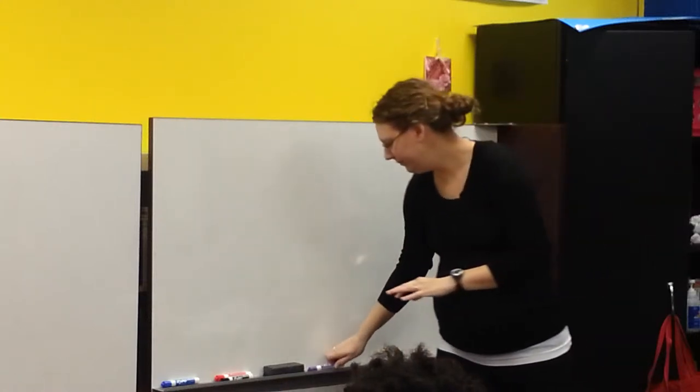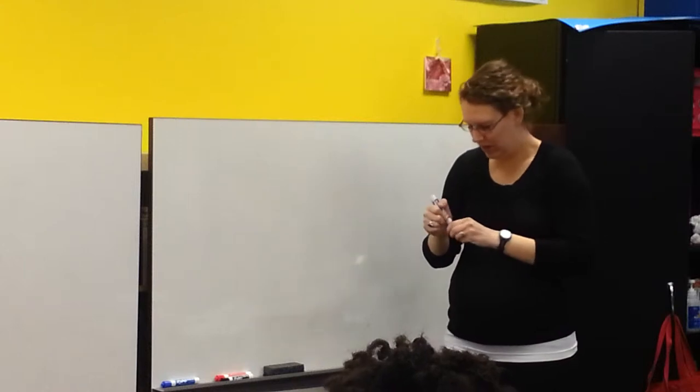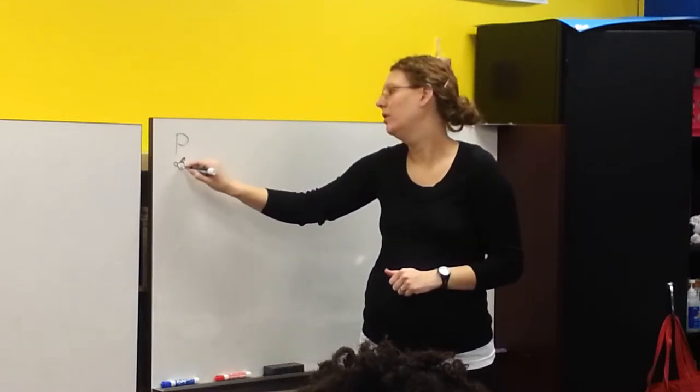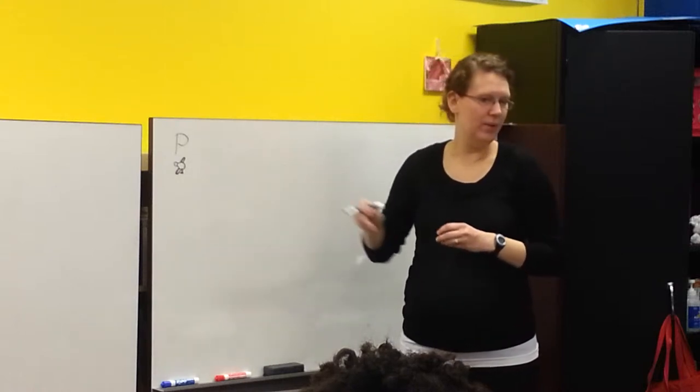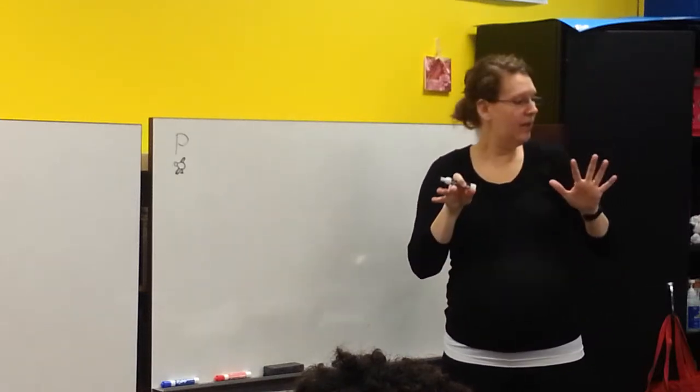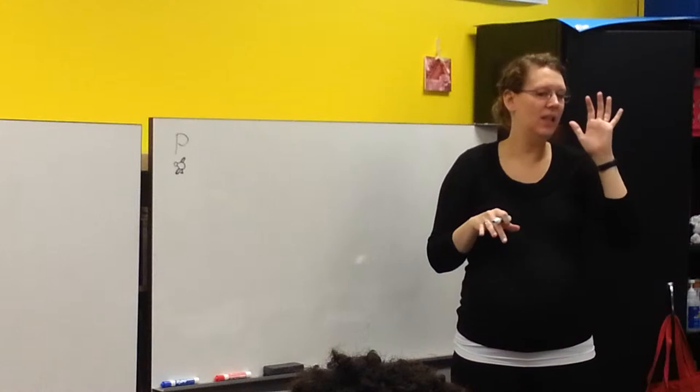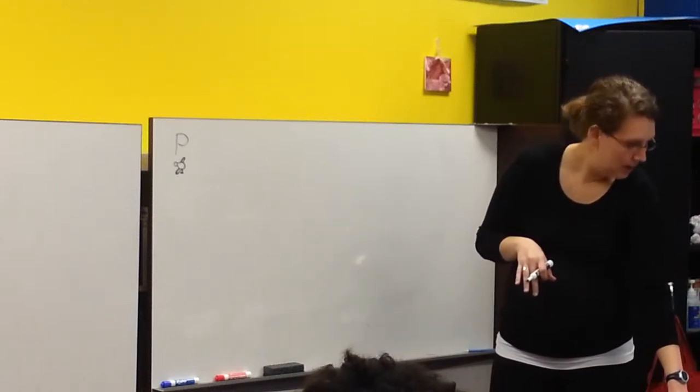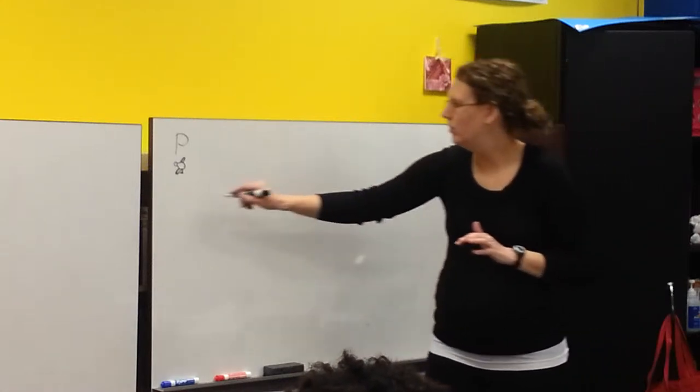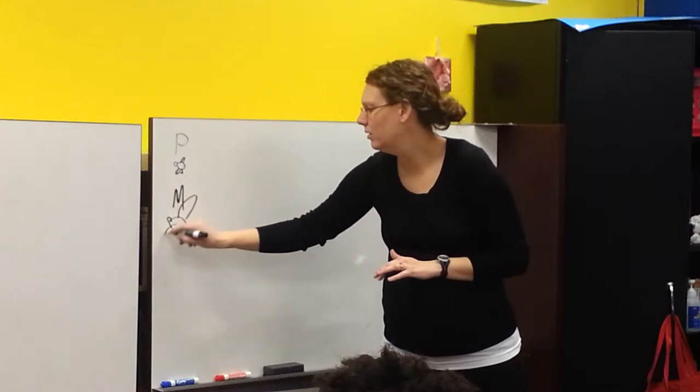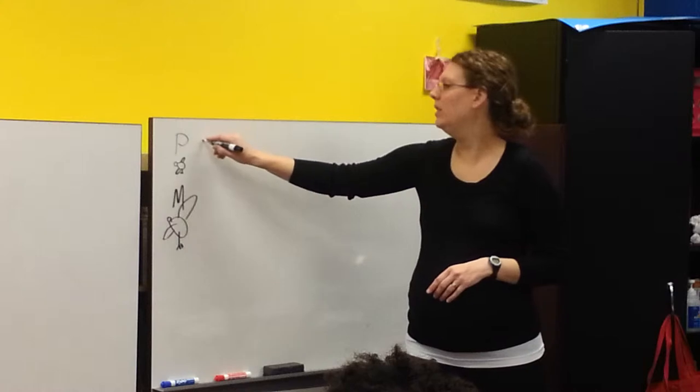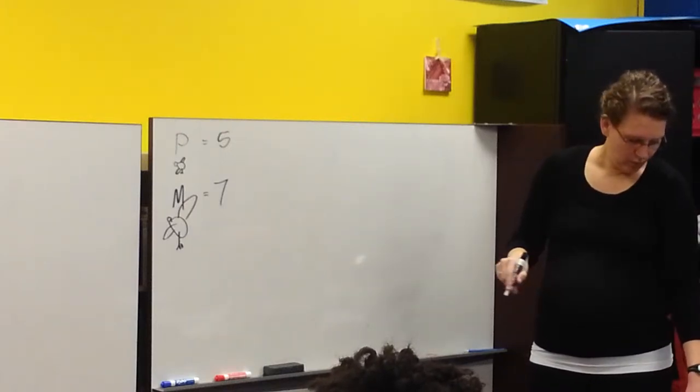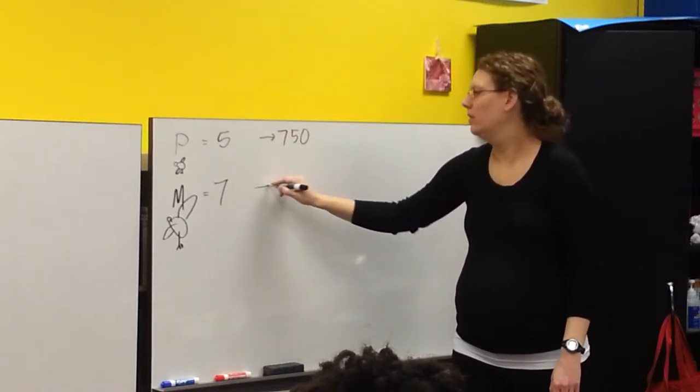So parrots to macaws was 5 to 7. So let's look at, we'll say parrots. You can write big P, you can draw a little birdie. So parrots, how many parrots were there? The way you read that, if it lists parrot first, then parrot is going to be the first number in the sequence. We're looking at 66.1, the example. Parrots to macaws, so there are 5 parrots and how many macaws? 7. Good. 5 to 7.